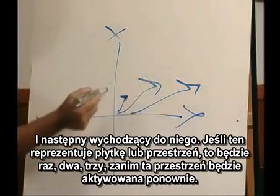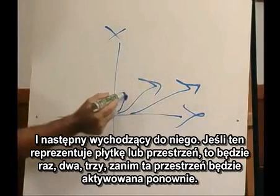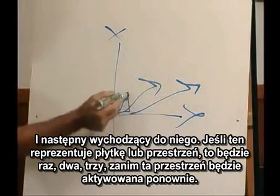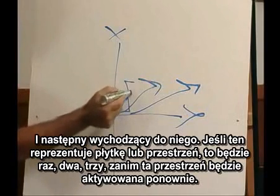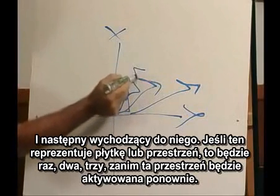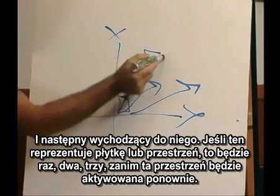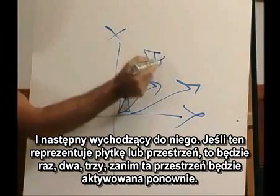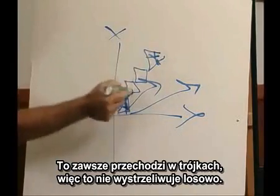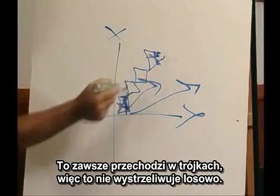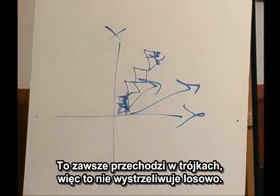This is long, and the next one coming out to it — if this is representing a tile or a space, there's going to be one, two, three before that space is ever activated again. It's always in thirds, so they're just not shooting out randomly.